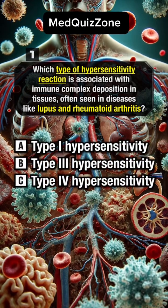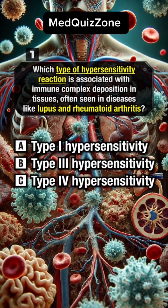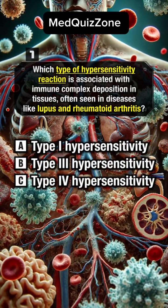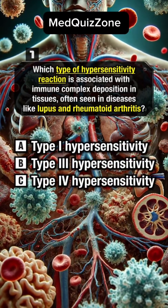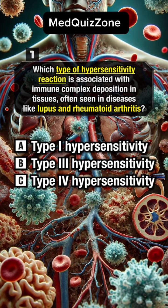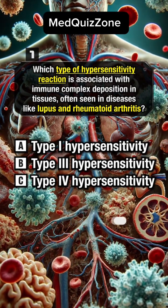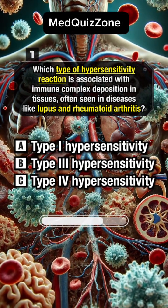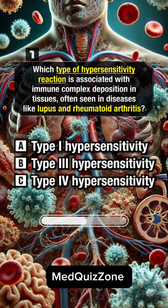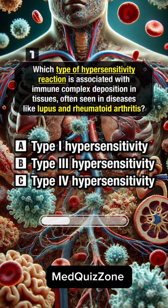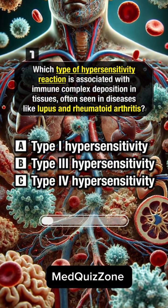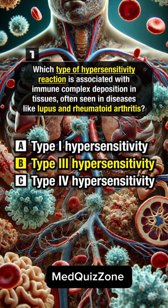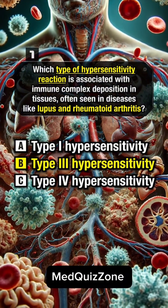Which type of hypersensitivity reaction is associated with immune complex deposition in tissues, often seen in diseases like lupus and rheumatoid arthritis? Answer B, type 3 hypersensitivity.